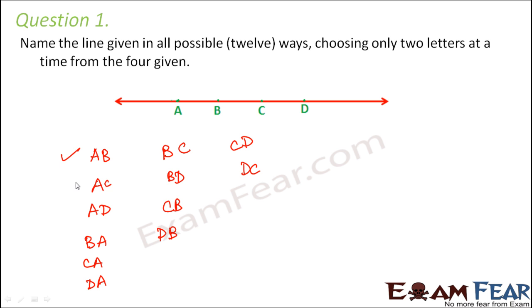So how many did we get? 1, 2, 3, 4, 5, 6, 7, 8, 9, 10, 11 and 12. So these are the all 12 possible ways by which this line can be named.